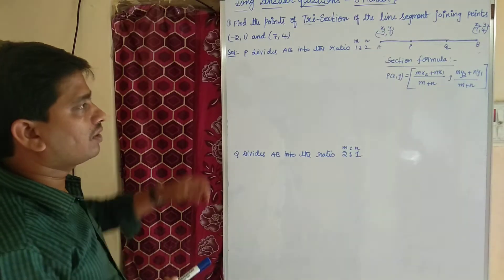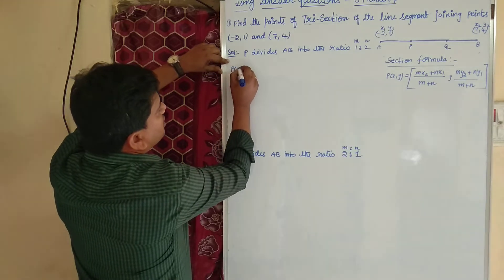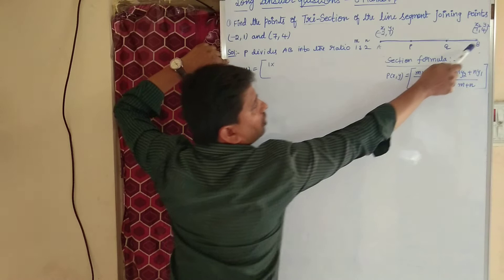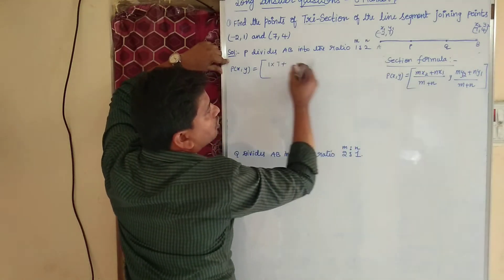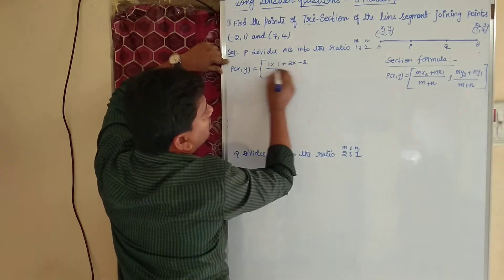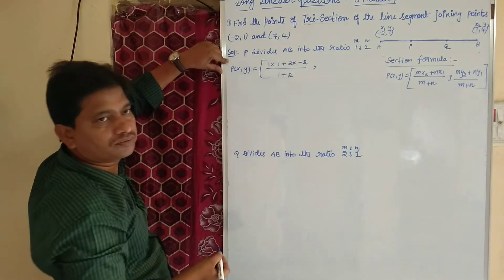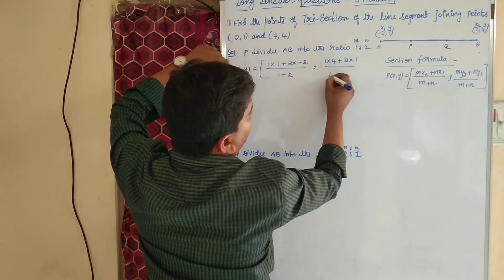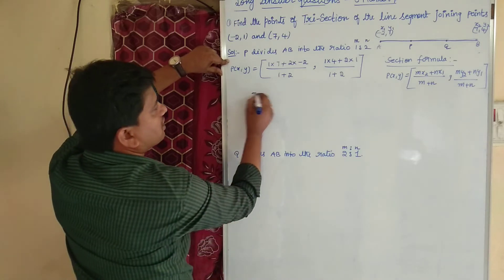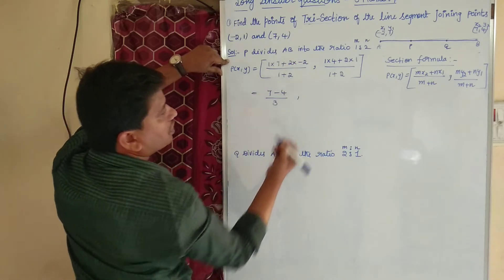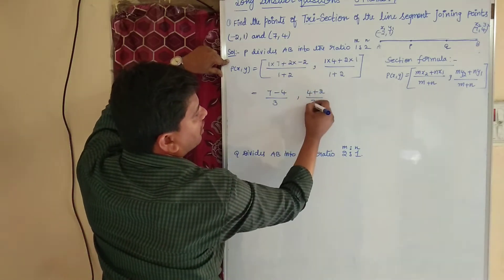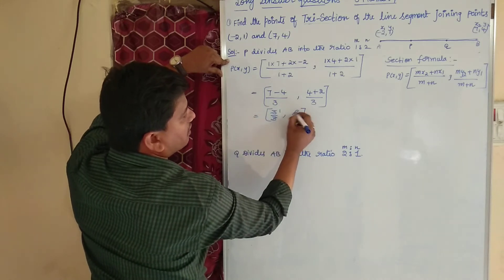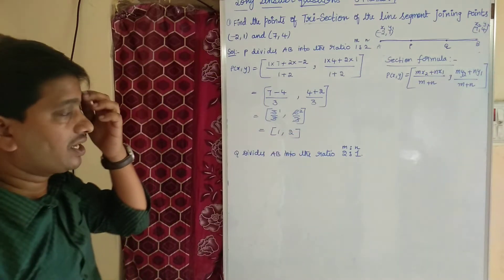Now let us substitute the given points in the formula. P of (X, Y) equals: M value 1 into X2 value 7, plus N value 2 into X1 value -2, divided by M plus N, that is 1 plus 2. Comma: M value 1 into Y2 value 4, plus N value 2 into Y1 value 1, divided by 1 plus 2. That gives us 7 minus 4 = 3, divided by 3, and 4 plus 2 = 6, divided by 3. So P of (X, Y) is (1, 2).